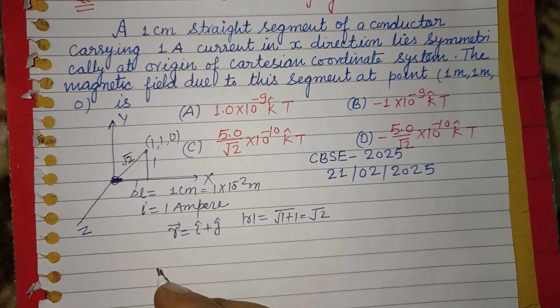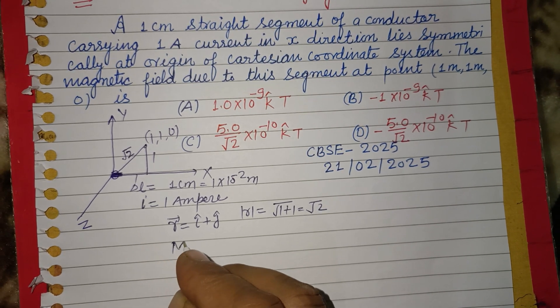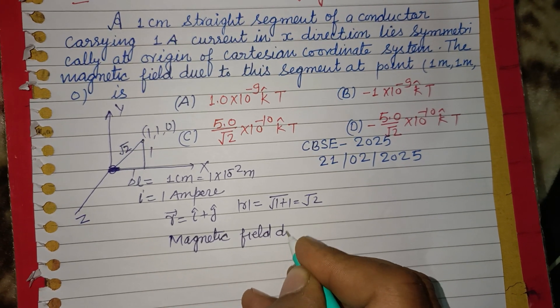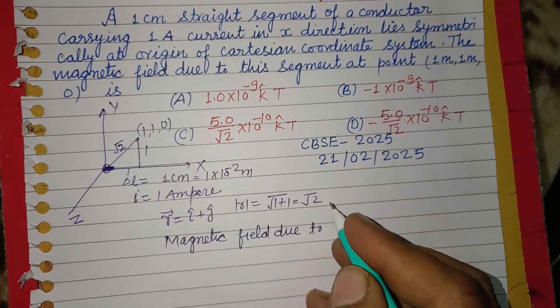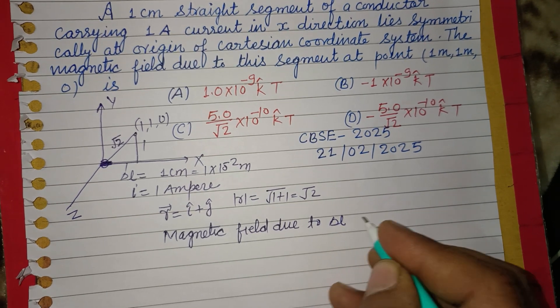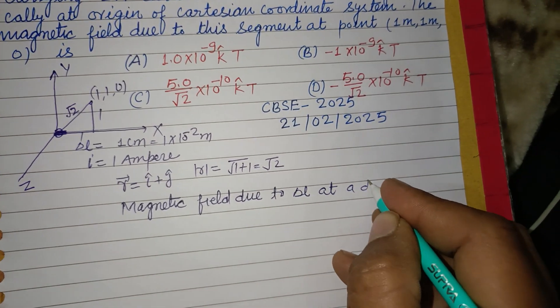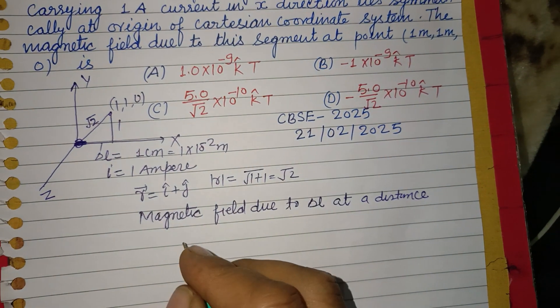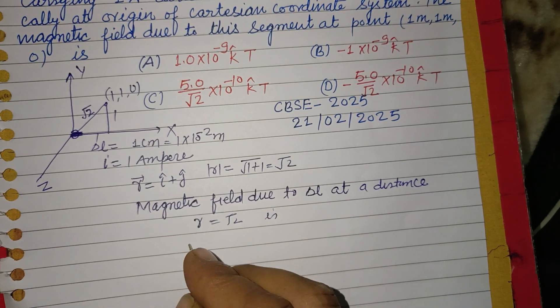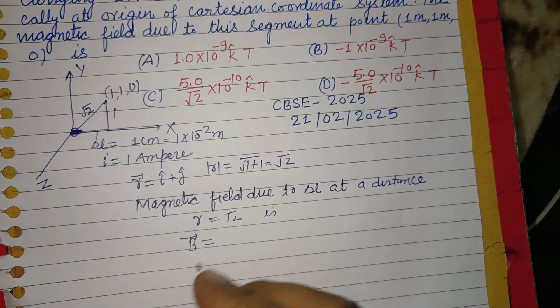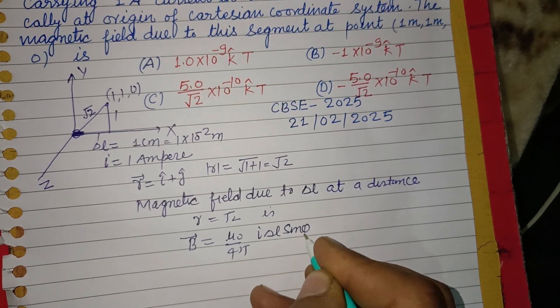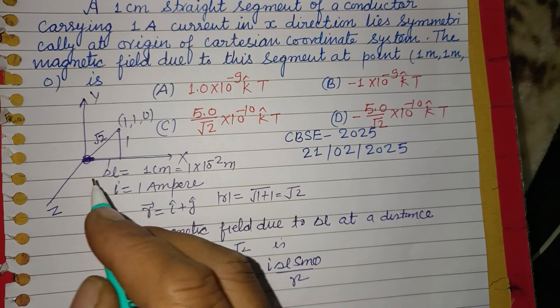Now magnetic field due to a small conducting element dlL at distance R, which is √2, is given by Biot-Savart law: B = (μ₀/4π) × (i × dlL × sinθ)/r².